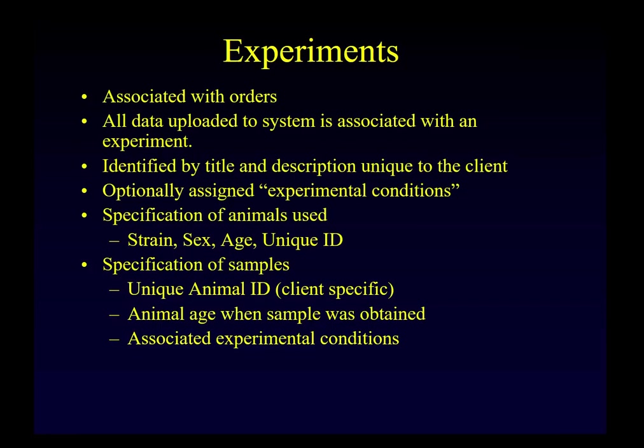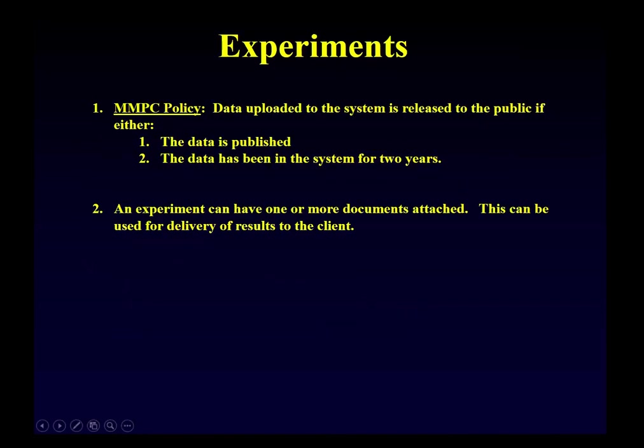We capture the age of the animal when the sample was obtained and can assign experimental conditions. The policy for any data uploaded into the MMPC system is that it will be released to the public if either the data is published or it has been in our system for two years. Two weeks before release, the system sends an email to the client notifying them. If they need to hold off — for example, if they're in the middle of a publication — they can email us and we'll add additional time. We're very flexible with that.